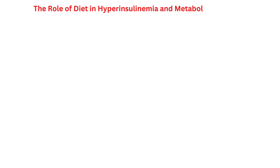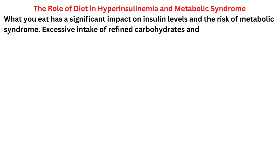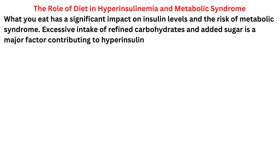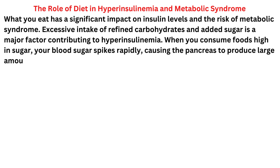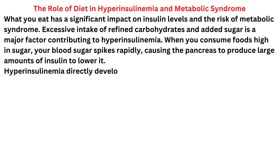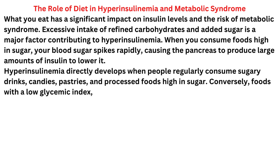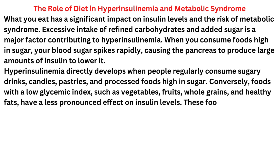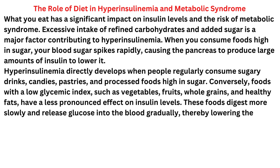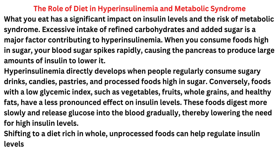The role of diet in hyperinsulinemia and metabolic syndrome. What you eat has a significant impact on insulin levels and the risk of metabolic syndrome. Excessive intake of refined carbohydrates and added sugar is a major factor contributing to hyperinsulinemia. When you consume foods high in sugar, your blood sugar spikes rapidly, causing the pancreas to produce large amounts of insulin to lower it. Hyperinsulinemia directly develops when people regularly consume sugary drinks, candies, pastries, and processed foods high in sugar.